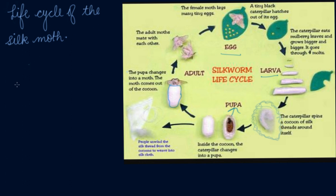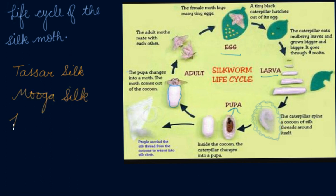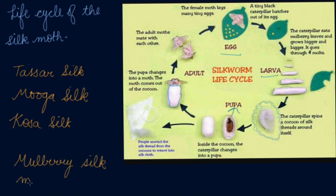There are various types of silk that are very popular, such as tassar silk, moga silk, and kosa silk. The most common is the mulberry silk moth. The eggs stay on the mulberry leaves and the silkworms get their food from the mulberry leaves in order to grow bigger and bigger.